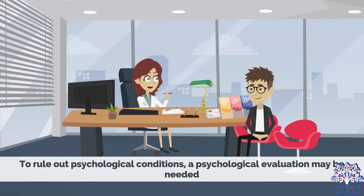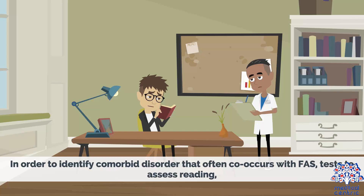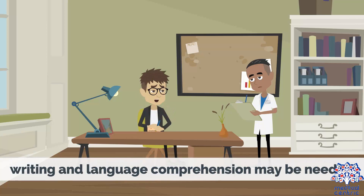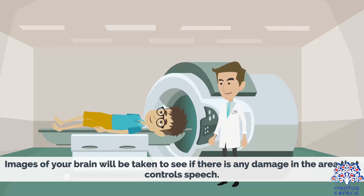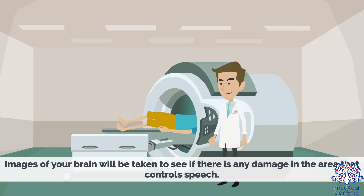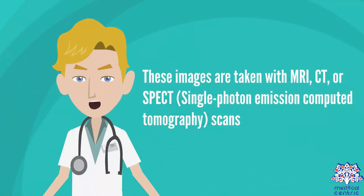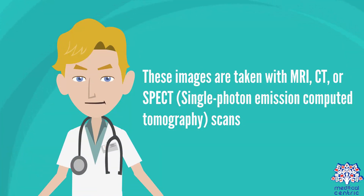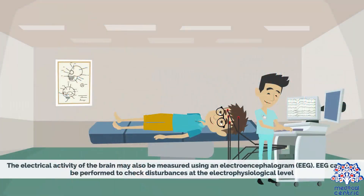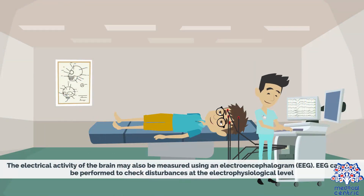To rule out psychological conditions, a psychological evaluation may be needed. To identify comorbid disorders that often co-occur with FAS, tests to assess reading, writing, and language comprehension may be needed. A recording may also be used to analyze speech patterns. Images of your brain will be taken with MRI, CT, or SPECT scans to check for damage in areas that control speech. The electrical activity of the brain may also be measured during an electroencephalogram, or EEG, to check disturbances at the electrophysiological level.